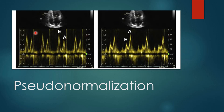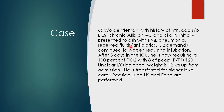Pseudonormalization is a concept. If you have stage two diastolic dysfunction and E is greater than A but you didn't know if you had diastolic dysfunction, and you saw this pattern and weren't sure if it was normal or diastolic dysfunction — if you have them Valsalva, give nitroglycerin, or diurese them and you get an E smaller than A pattern, that confirms the patient has diastolic dysfunction. This is called pseudonormalization.